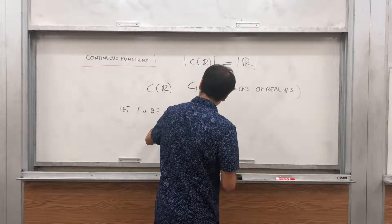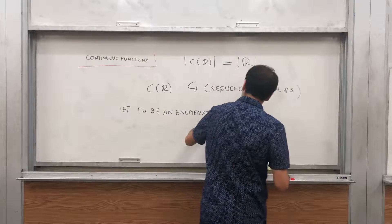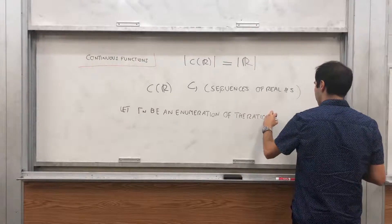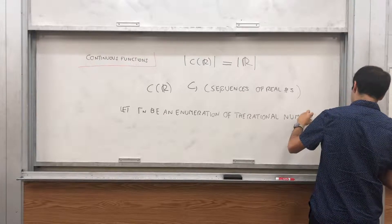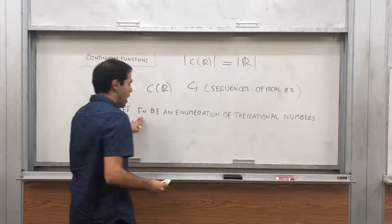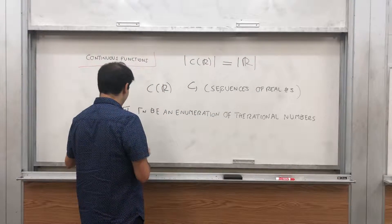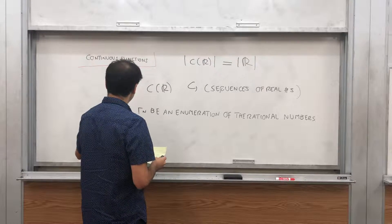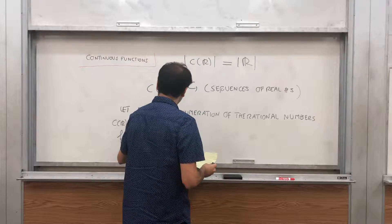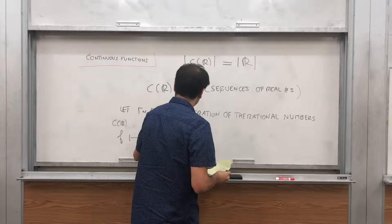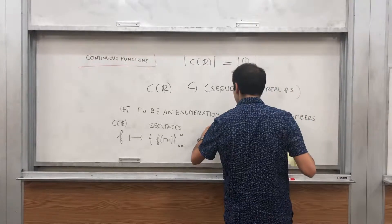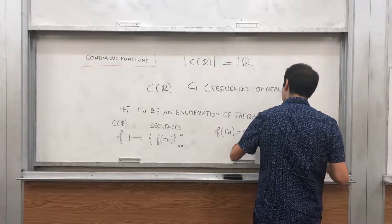First, one thing you need to know: the rational numbers are countable. So let R_n be an enumeration of the rational numbers. This sequence exists because the rational numbers are countable. Associate to any continuous function the following sequence: f of all the rational numbers. Define a function from C(ℝ,ℝ) to those sequences that associates to f the sequence f(R_n) for n from 1 to infinity. I claim this map is one-to-one.